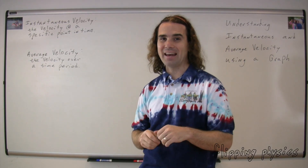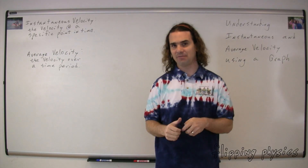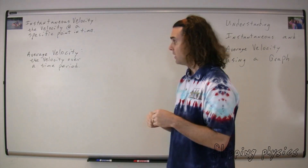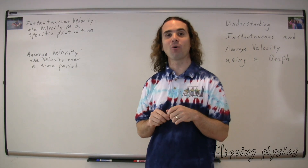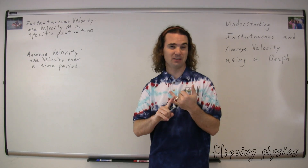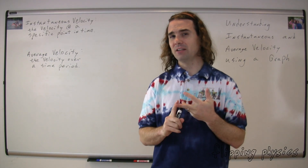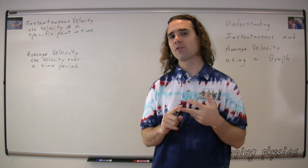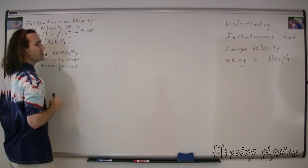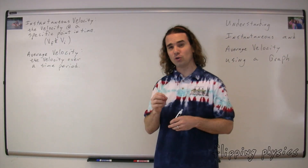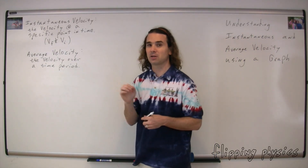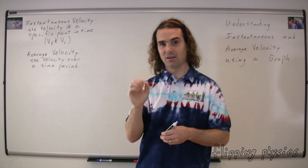We've actually already had examples of these two different kinds of velocity, and we just haven't identified them as such. For example, in your uniformly accelerated motion equations, there are two velocities: velocity final and velocity initial. Are those instantaneous or average velocities? Final velocity would be the velocity at the final point, which is a specific point in time. Therefore, it must be an instantaneous velocity. And the same thing is true for the initial velocity. They're both instantaneous velocities. The two variables, velocity final and velocity initial, from our UAM equations are instantaneous because they're velocities at specific points in time — that final point and that initial point.